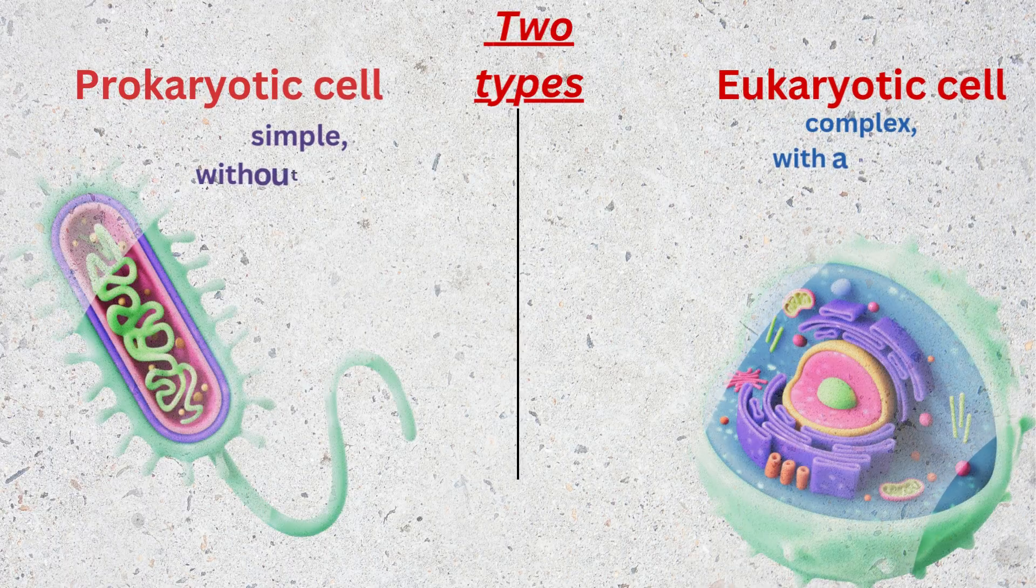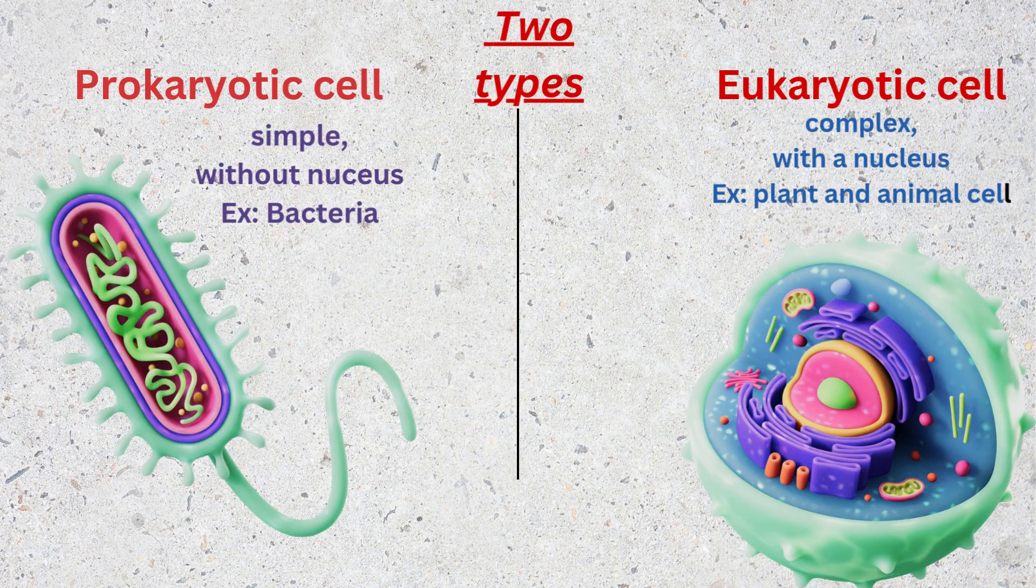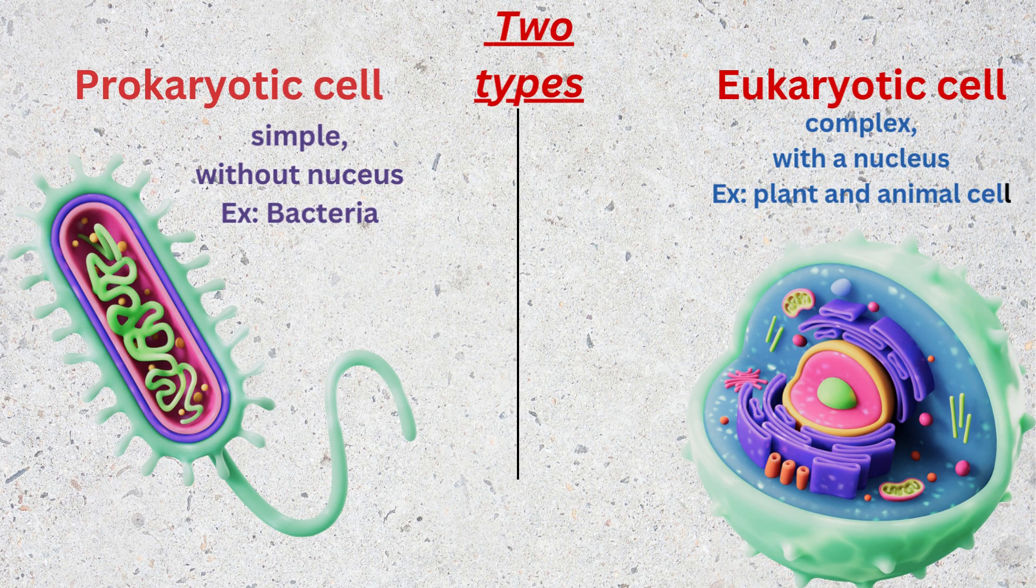There are two main types of cells. Prokaryotic cells, they are simple and have no nucleus. For example, bacteria. And eukaryotic cells, they are complex with a nucleus. Examples are plant and animal cells.